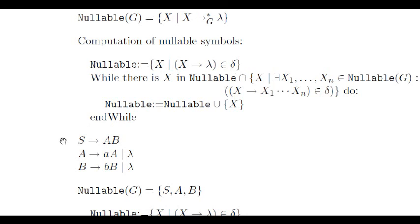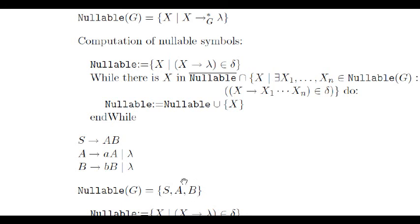In our example, the algorithm will detect, in the first step, that A and B are nullable, since they rewrite into the empty word in one step. In the loop, it will detect that S is nullable, since it rewrites into the concatenation of two nullable symbols. In summary, S, A and B are nullable, since the empty word can be reached from all of them by rewriting.